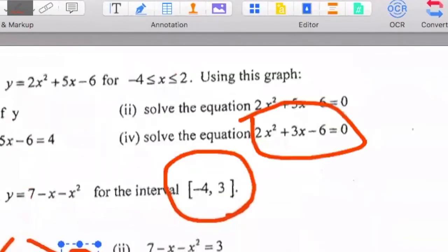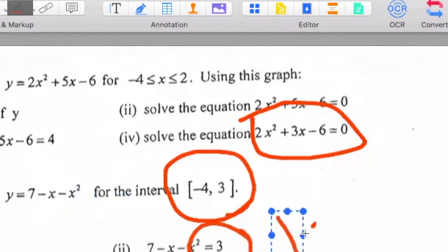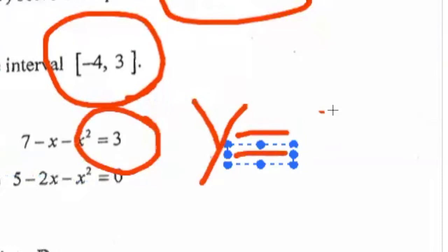Now, looking at the next part of the question, where we have 7 minus x minus x square equals 3. We're comparing this side with the original question, where we have the graph 7 minus x minus x square. As you can see, both of them are the same. So, it means my focus should be on what is over the equal sign, where we have this being y equal 3.